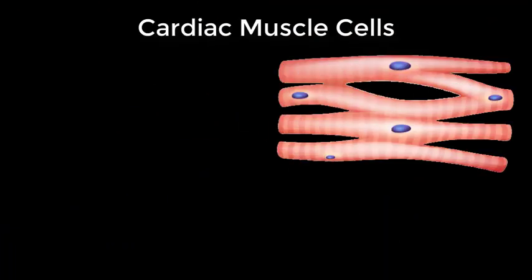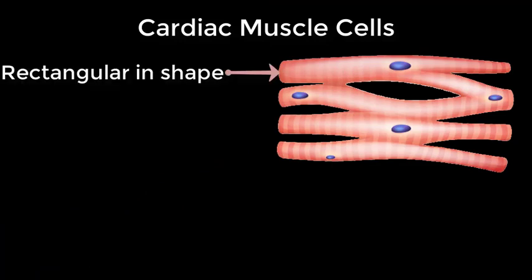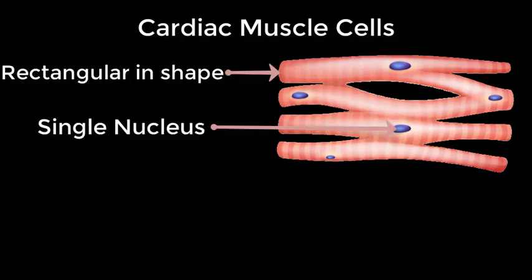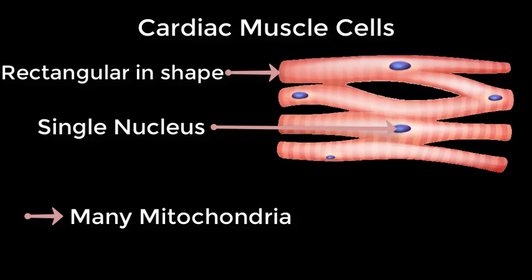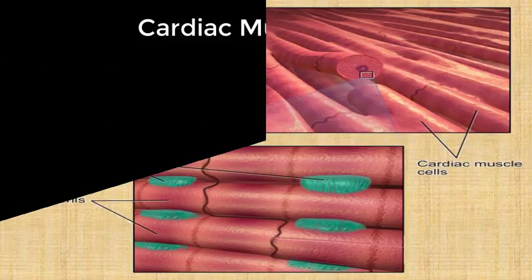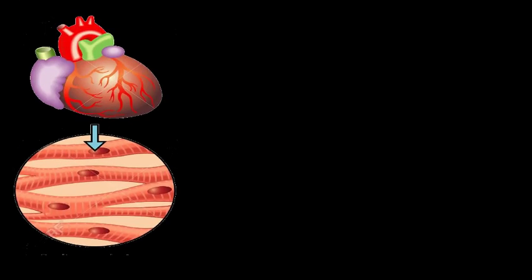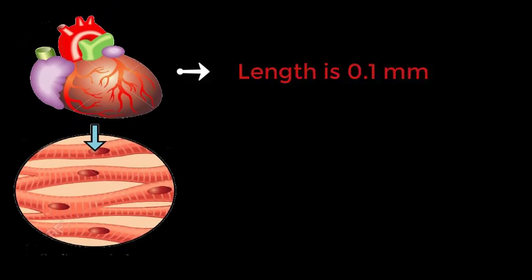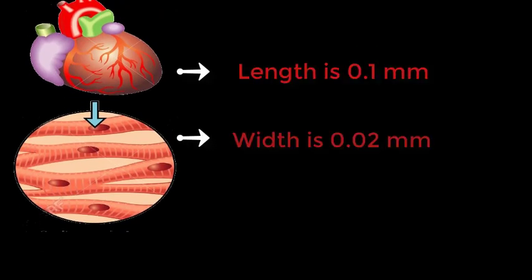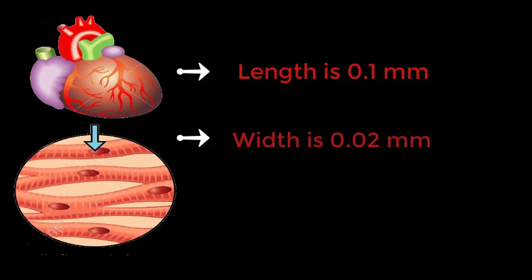Lastly, the cardiac muscle cells. They are rectangular in shape, consist of a single nucleus, contain many mitochondria, and communicate via intercalated discs. They are present in the myocardium — also known as the cardiac muscle — meaning they are found in the heart and help the heart to pump blood. The length of a cardiac muscle cell is about 0.1 mm while it is about 0.02 mm wide.